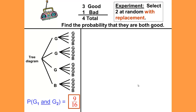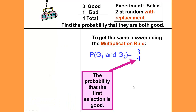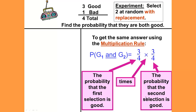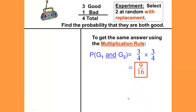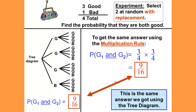First let's look at the experiment selecting two at random with replacement. To get the same answer using the multiplication rule, we find the probability that the first selection is good — which is 3 out of 4 — and then multiply that by the probability that the second selection is good — which is also 3 out of 4 — giving us 9 out of 16. This is the same answer we got using the tree diagram.